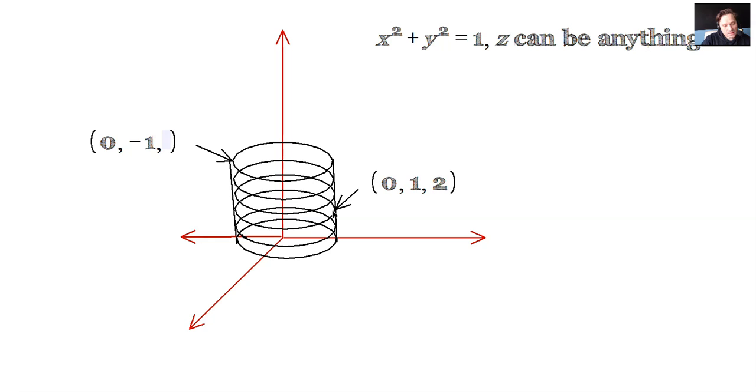So 1, 2, 3, 4, 5, for example. It would make this equation true because 0 squared plus negative 1 squared is still 1. That's made true. z can be anything, including 5.